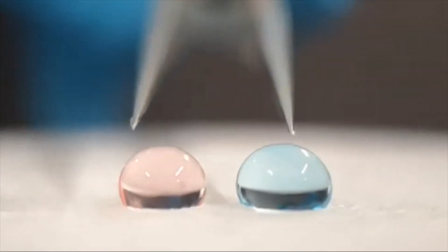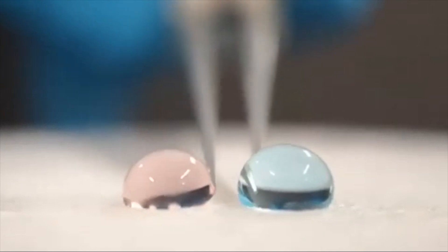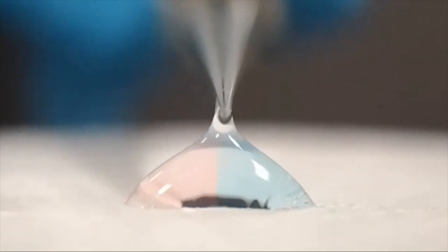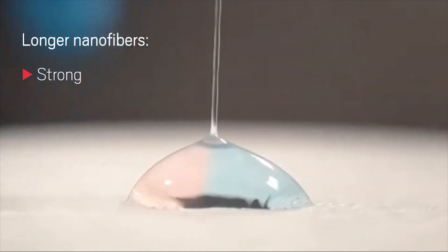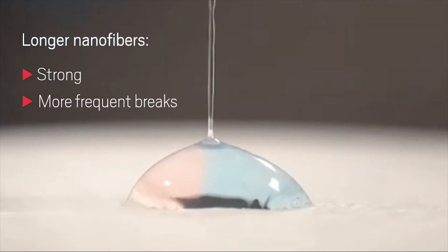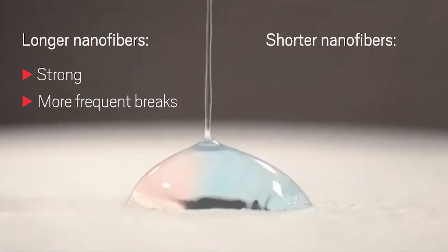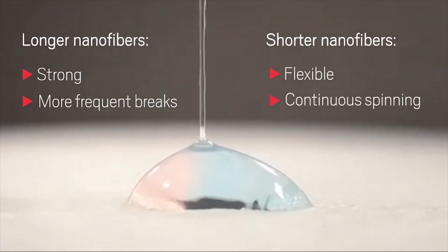The researchers studied how variables like the concentration of each component and the size of the chitin nanofibers affected the properties of the composite thread. For example, they found that longer nanofibers made the thread stronger, but it also broke more frequently, possibly because the larger nanofibers more easily form clumps that can act as defects. Shorter nanofibers gave the thread more flexibility and made it easier to spin continuously.